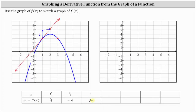Now let's sketch the tangent line at x equals three. Starting with the point of tangency, if we move down two units, the vertical change is negative two, and right one unit, the horizontal change is positive one. The slope of the tangent line at x equals three is negative two, which gives us the point three comma negative two on the graph of the derivative function.